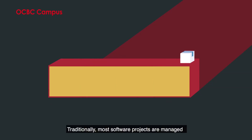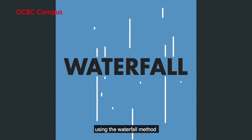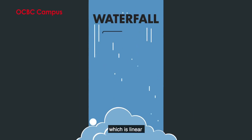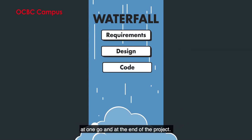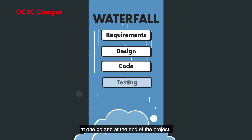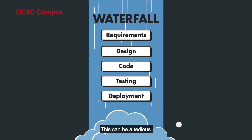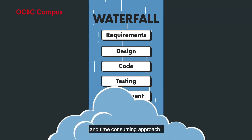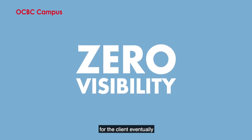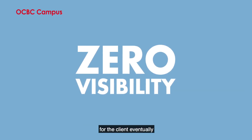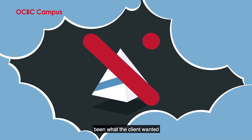Traditionally, most software projects are managed using the waterfall method, which is linear and delivers all of the project deliverables at one go and at the end of the project. This can be a tedious and time-consuming approach, and because there is zero visibility to the client, the deliverables might not have been what the client wanted.